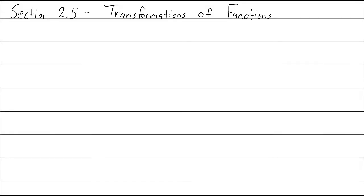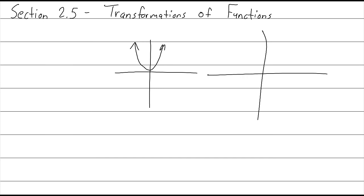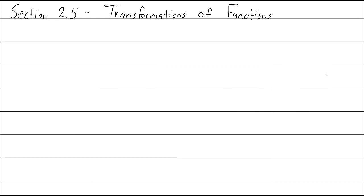Section 2.5, transformations of functions. This section talks about how you can have a graph of one function and then perform a series of transformations to make it look like something else. You can start with a graph and transform it by shifting it — that's called a translation — or you can reflect it, flip it upside down or across the y-axis or x-axis, and you can stretch it or compress it. All these things are done by manipulating the formula.